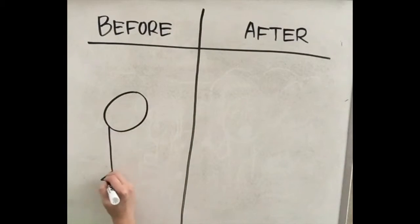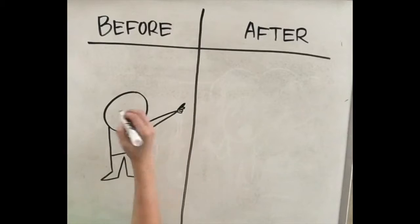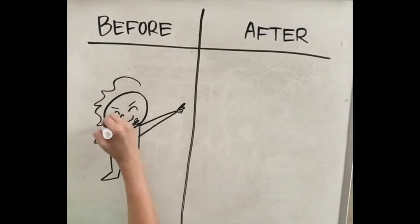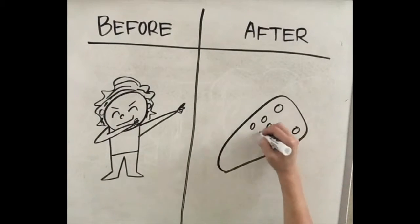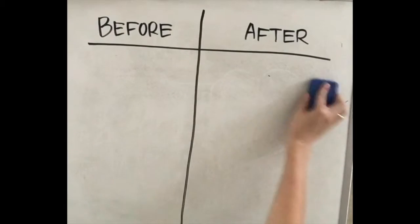Every time Ben turns off the TV, dances, and turns his TV back on, the TV remote works again. Clearly, Ben's little dance routine is the only reason the remote is working. Next example.